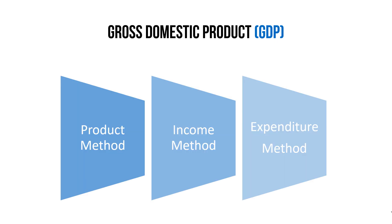Now, how can we calculate GDP? In economics we have three methods to calculate GDP: first, the product method (also called the value-added method); second, the income method; and third, the expenditure method. These three methods are basically derived from the flow of income in the economy.